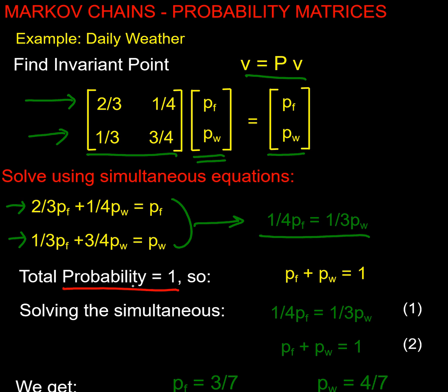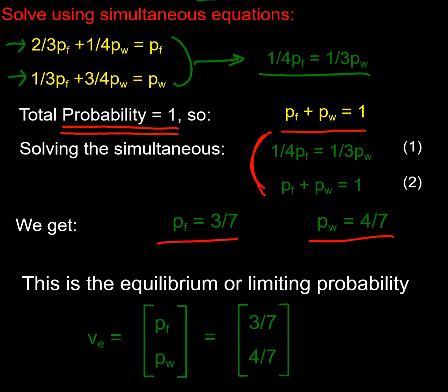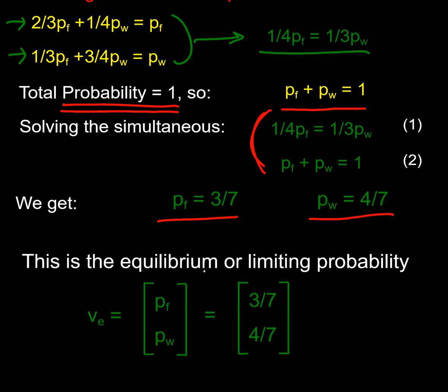But there's something else that I know about probabilities: I know that these two probabilities must add up to one. So I needed a second equation in order to solve this. I've now got two equations and I can now solve and find pf and pw. And what do I get if I do that? Well I find that pf is three sevenths and pw is four sevenths if you solve those two equations by substituting one in place of the other. And what I've actually got is some sort of long-term equilibrium or limiting probability v_e which could be written as a vector as three sevenths, four sevenths.